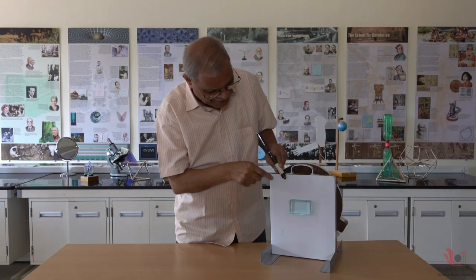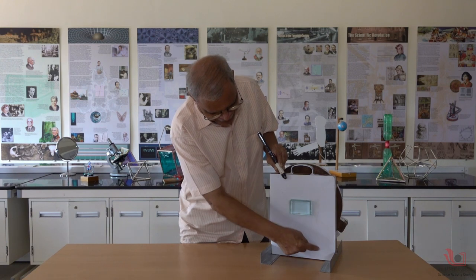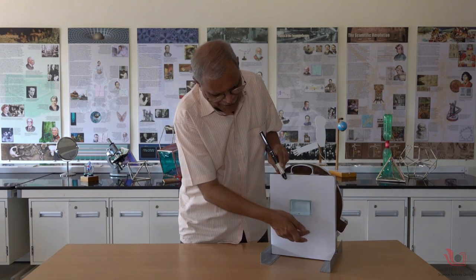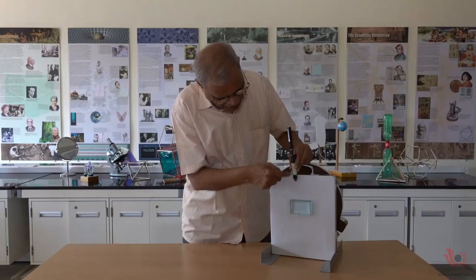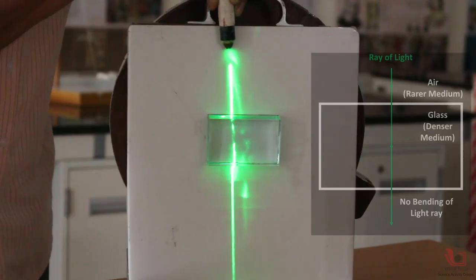We can see the ray of light coming and going like this. The incoming ray and outgoing ray are seen parallel when a ray of light comes perpendicular to the glass slab.